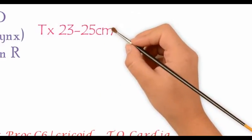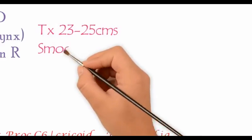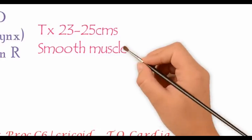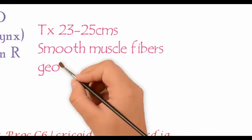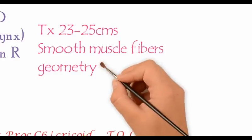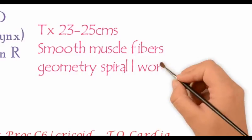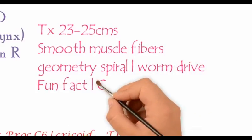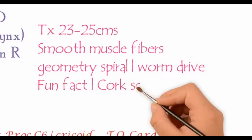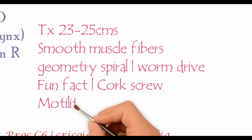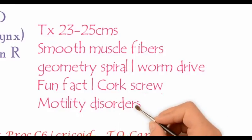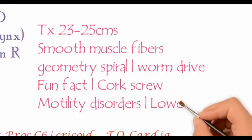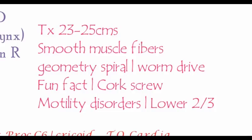The thoracic esophagus is 23 to 25 cm in length, having smooth muscles arranged in a helical pattern. Therefore, motility disorders affect the lower two-thirds of the esophagus, and myotomy should be done only in this region.